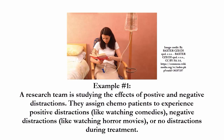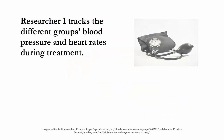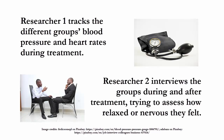To look at quantitative and qualitative results at work, let's look at a few examples. In our first example, a research team is studying the effects of positive and negative distractions. They assign chemo patients to experience positive distractions like watching comedies, negative distractions like watching horror movies, or no distractions during treatment. The first researcher tracks the different groups' blood pressure and heart rates during treatment, while the second researcher interviews the groups during and after treatment, trying to assess how relaxed or nervous they felt.